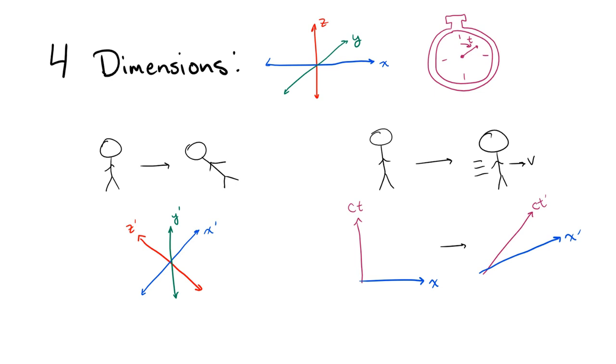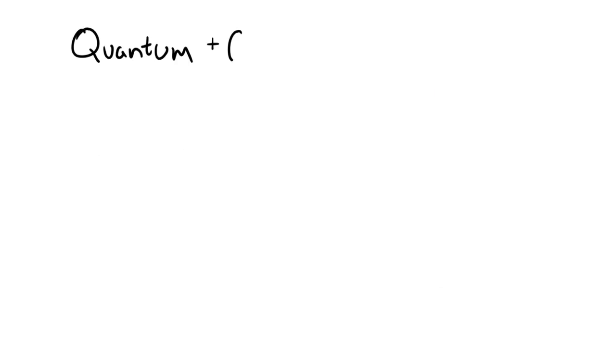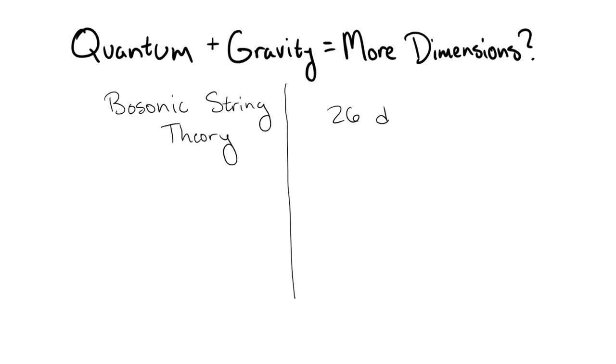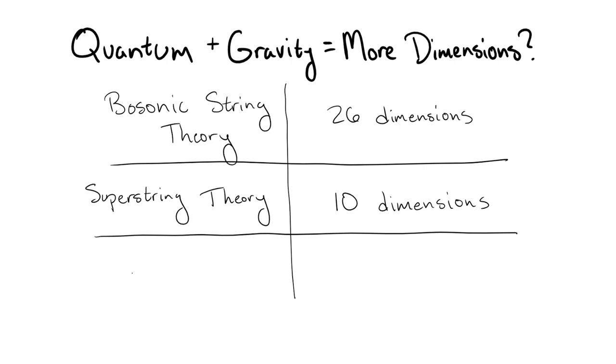There are many theories today which attempt to merge quantum mechanics with general relativity which require more than the four dimensions we know. Examples of such theories are bosonic string theory which requires 26 dimensions, superstring theory which requires 10 dimensions, and M-theory which requires 11.